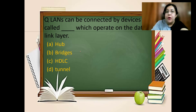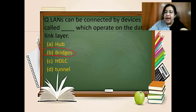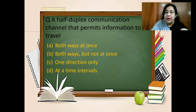Next question: LANs can be connected by devices called what, which operate on the data link layer? You connect different LANs with the help of a device called a bridge. Within a single LAN, computers are connected using a hub. To connect multiple LANs, a bridge is used. For wide area networks, a gateway is used.